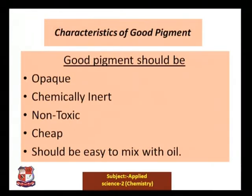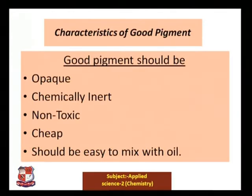The characteristics of a good pigment are: it should be opaque, it should be chemically inert so no chemical reaction occurs, it should be non-toxic, it should be cheap, and it should be easy to mix with the oil.